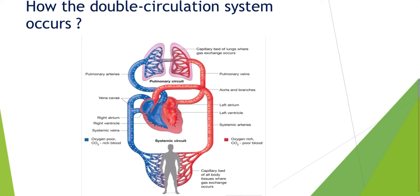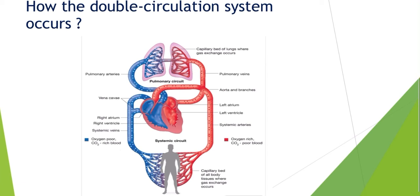The right ventricle contracts and pumps the deoxygenated blood at pressure to the lungs. When that deoxygenated blood reaches the lungs, it is delivered to the capillaries where gas exchange occurs — aerobic respiration happens, carbon dioxide is released, and oxygen is taken up. The lungs then deliver the oxygenated blood to the pulmonary veins, which transport it to the left atrium.